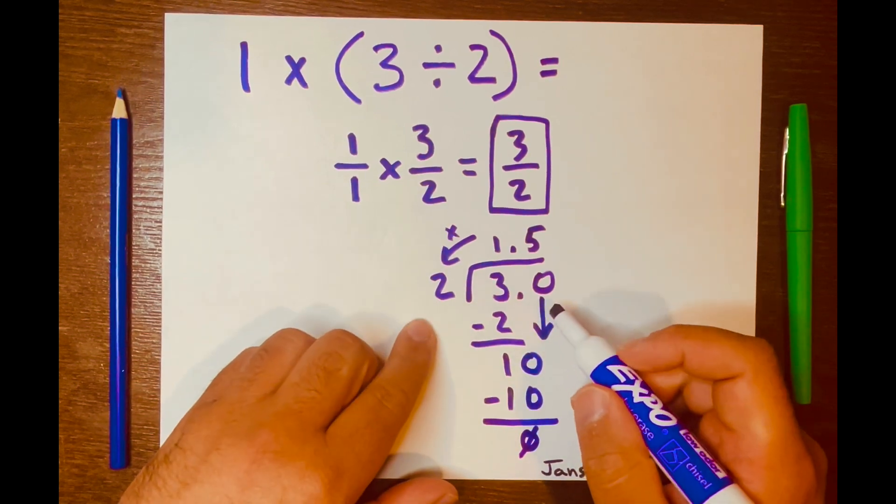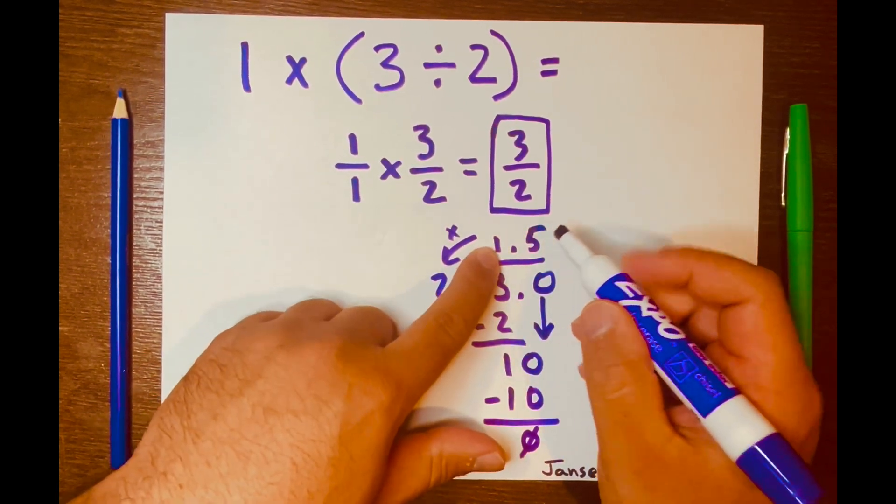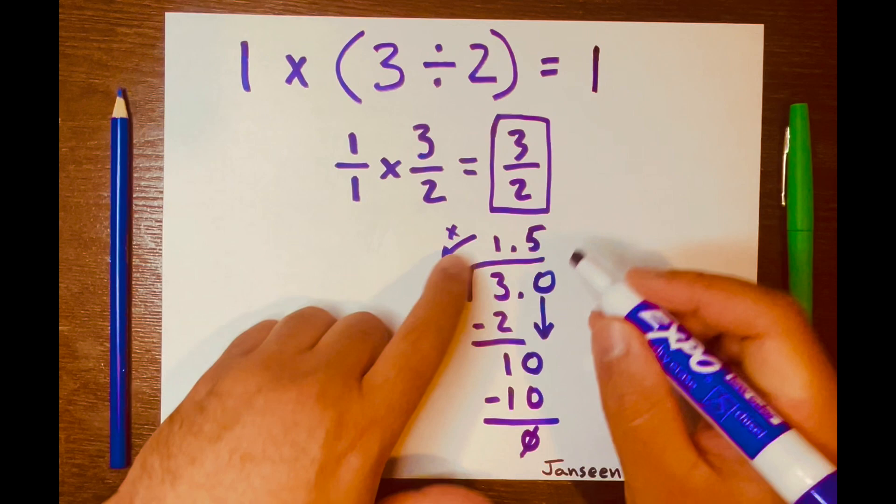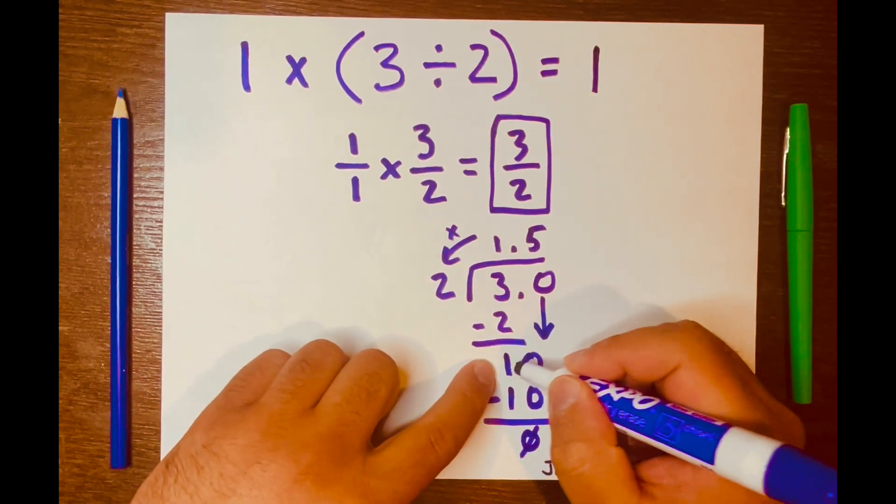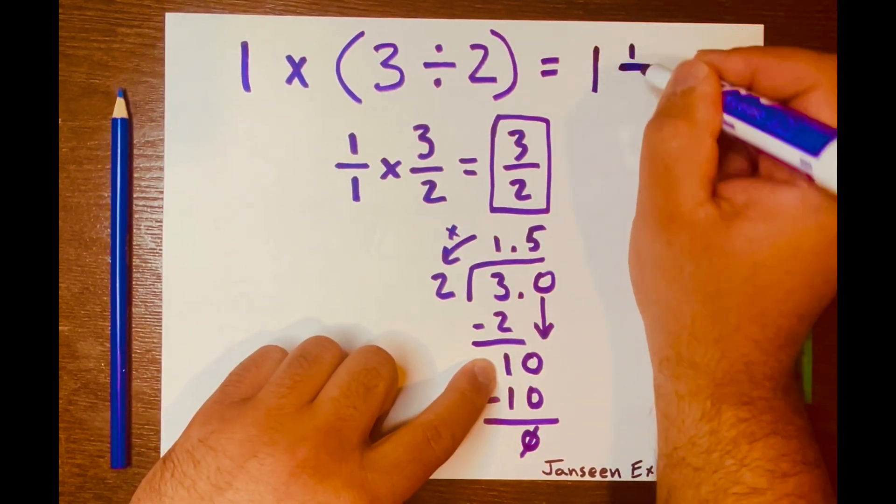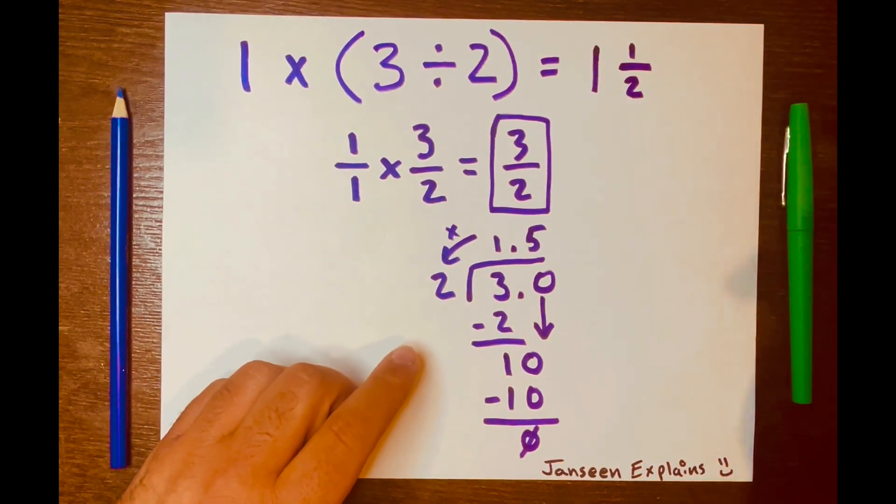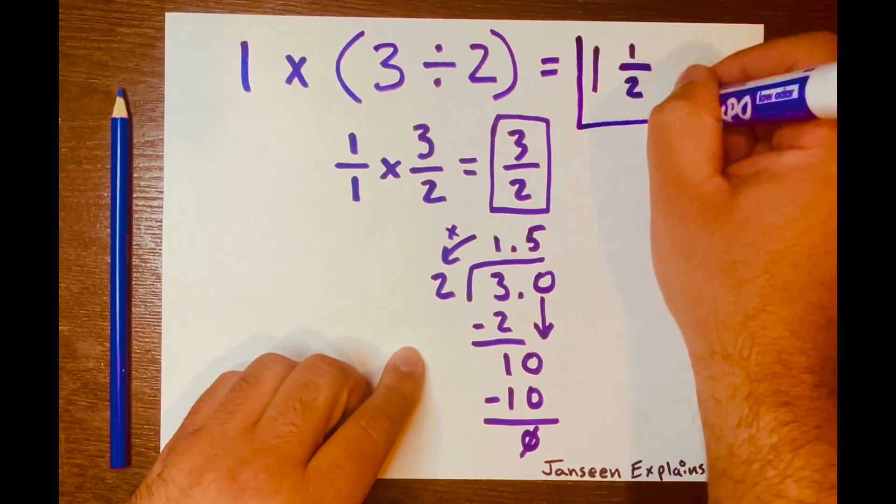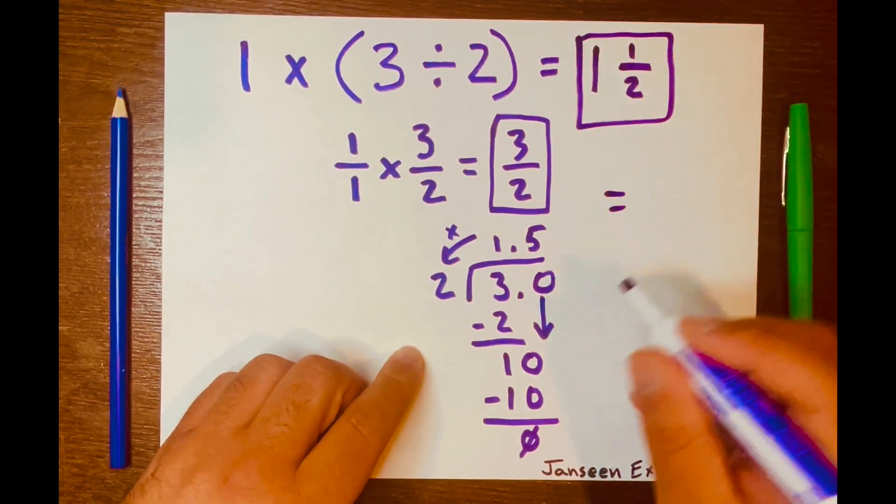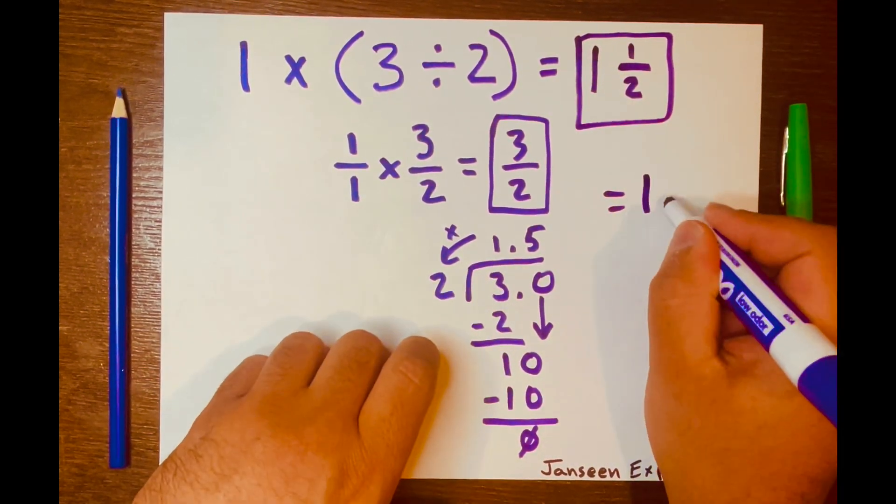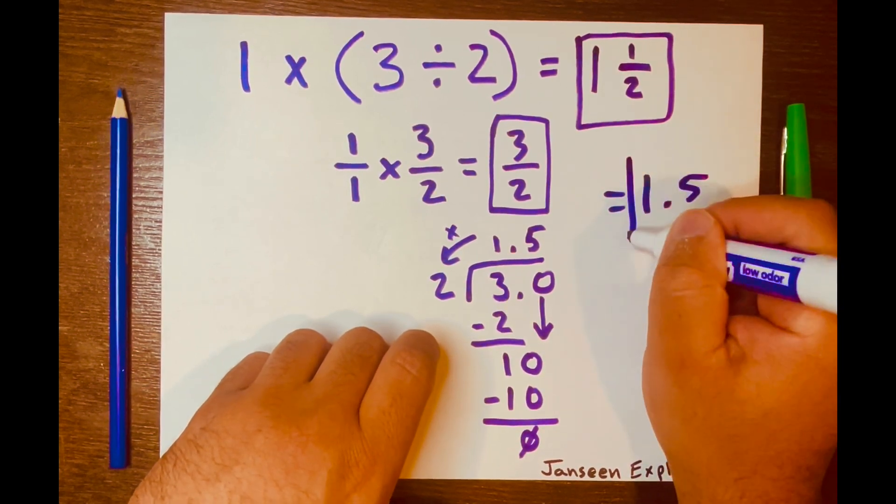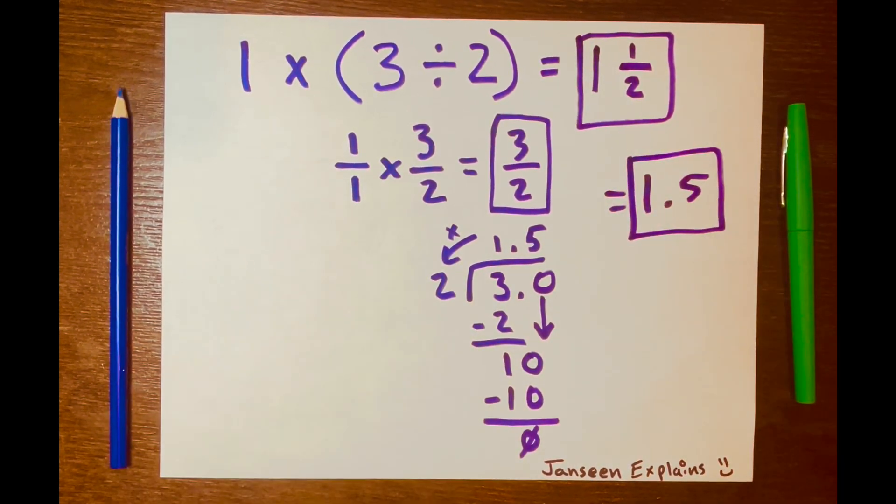So your mixed number answer will be that 1 as the whole, and then the remainder 1 here, and then the 2 as the denominator. So it's 1 and 1/2, or 1.5. This is your decimal answer, 1.5. And there you go.